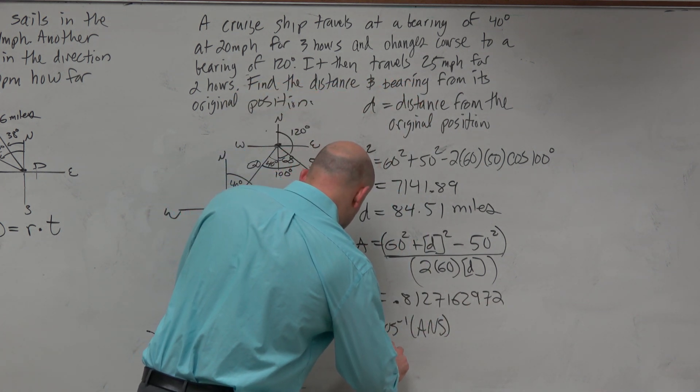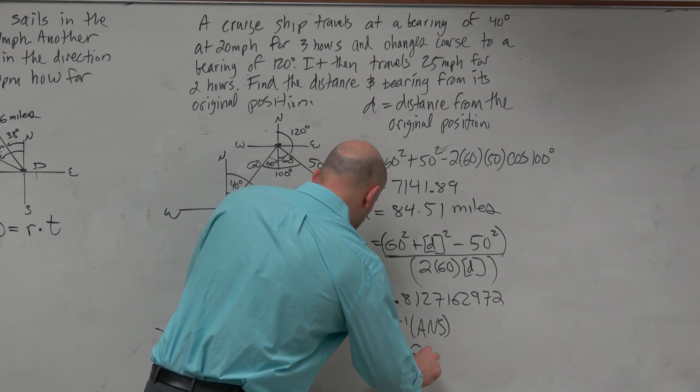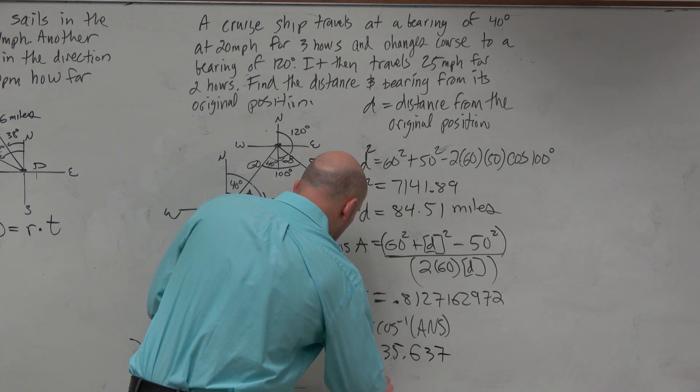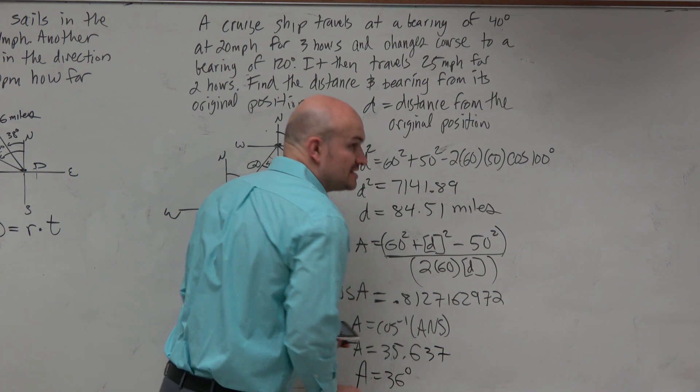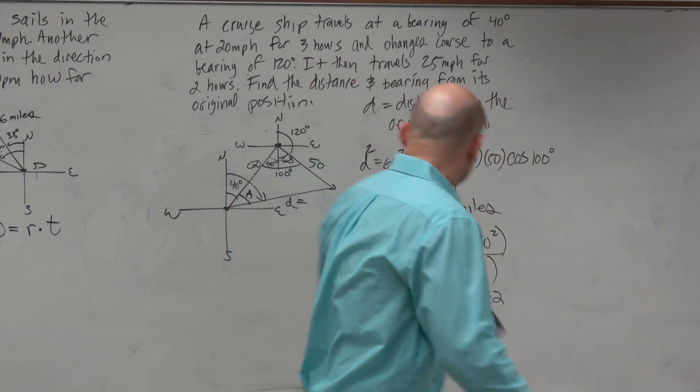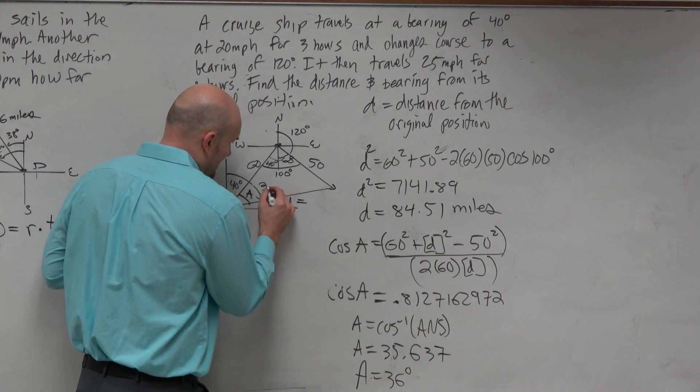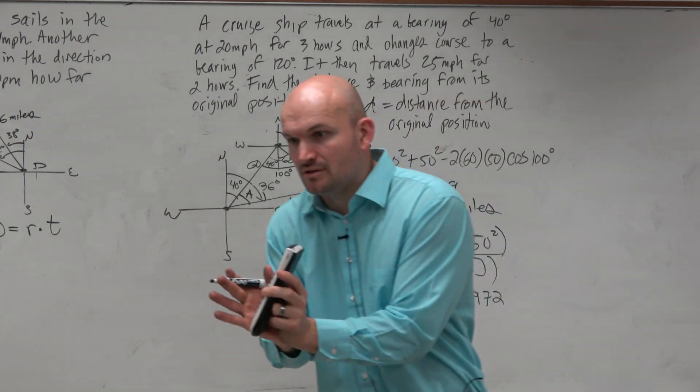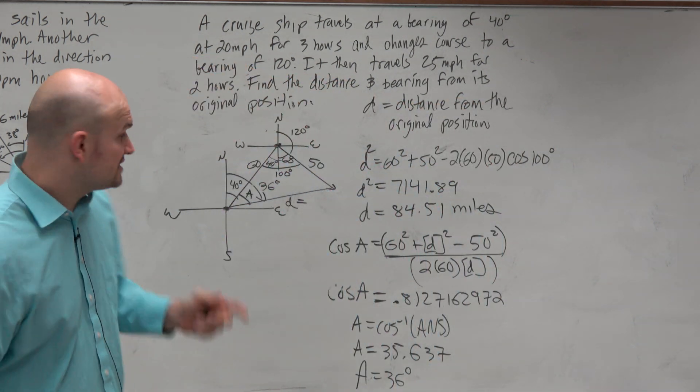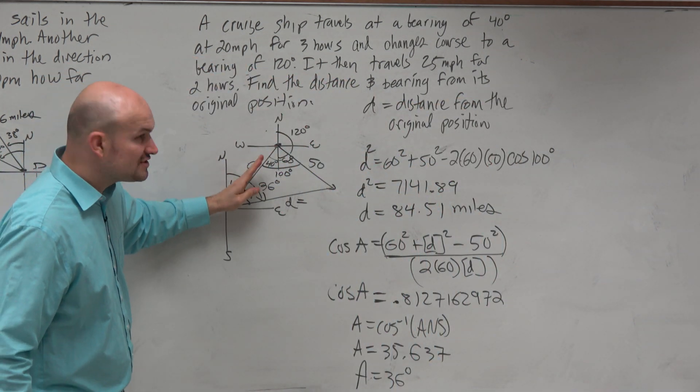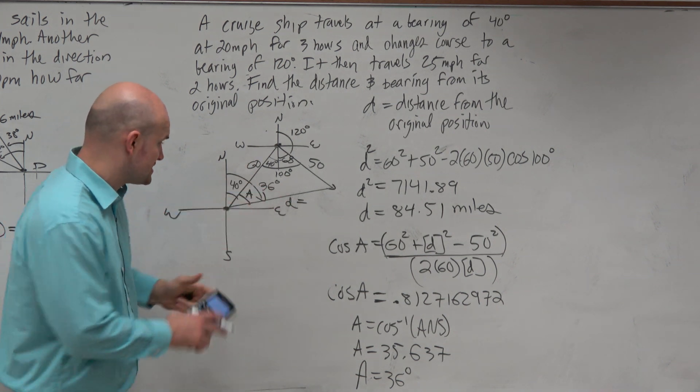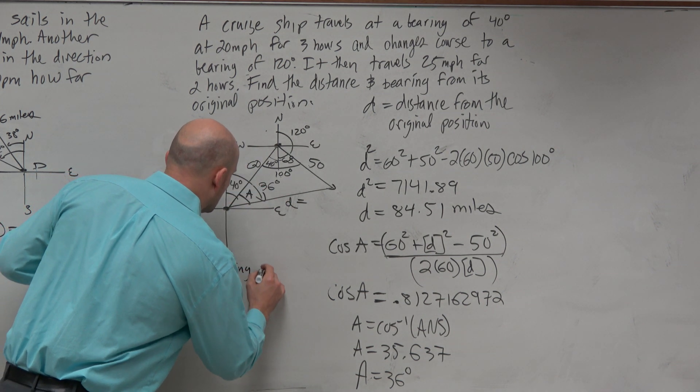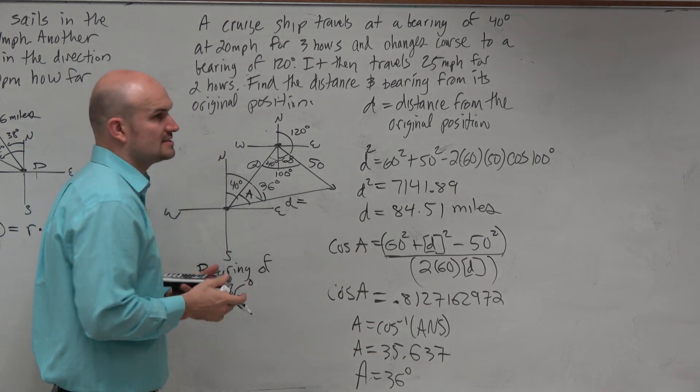So is that my bearing? Remember guys, read the question. A equals 36 degrees. You can round to the nearest whole. That's not the bearing. That's A. That's here. That's not the bearing. That's the angle inside of the triangle. The bearing is from due north. From here to here is 40 degrees. From here to here is 36. So it has a bearing of 76 degrees.